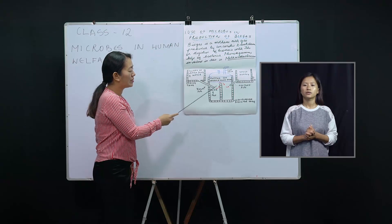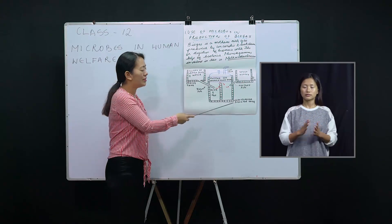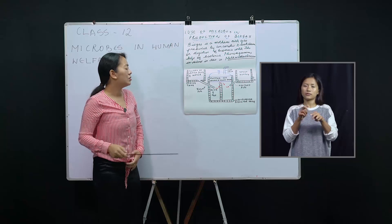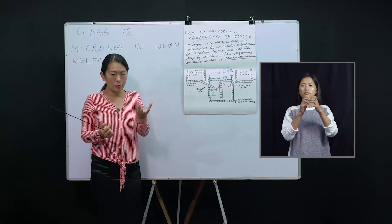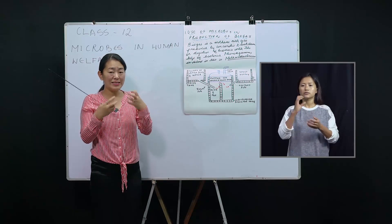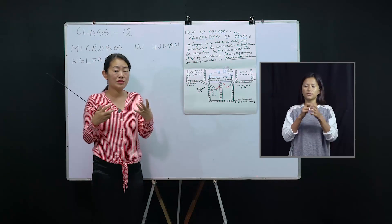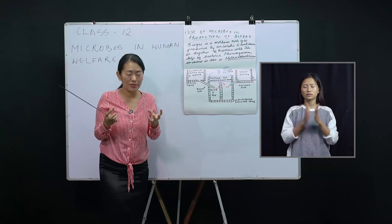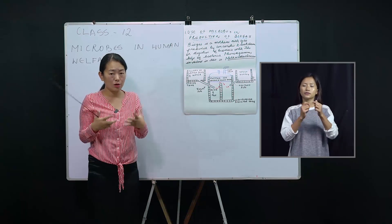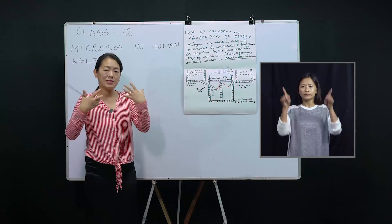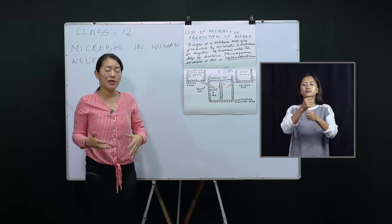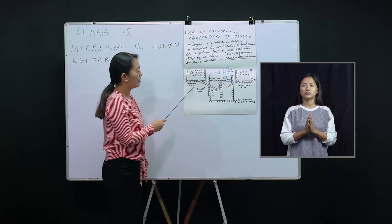This slurry then moves to the digester tank — the word 'digester' itself indicates it is digesting something. In the digester tank, microbes are present which break down the cattle dung and eat the organic matter. Cows eat lots of grass, so there is plenty of organic matter in their waste. Specifically, Methanobacterium eats the organic matter in the cow dung and releases gases — these gases are called biogas.